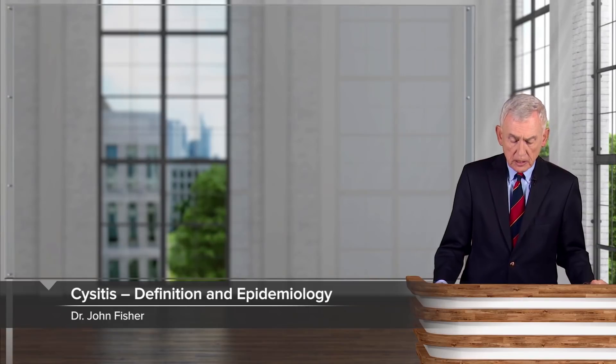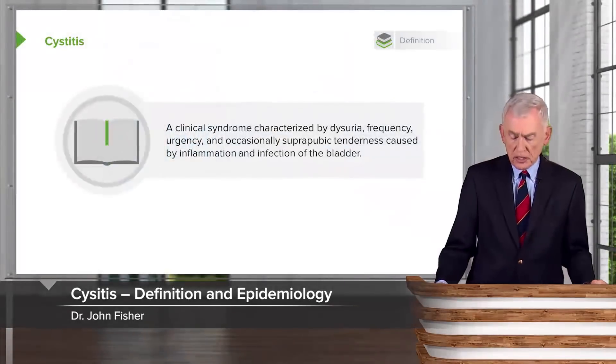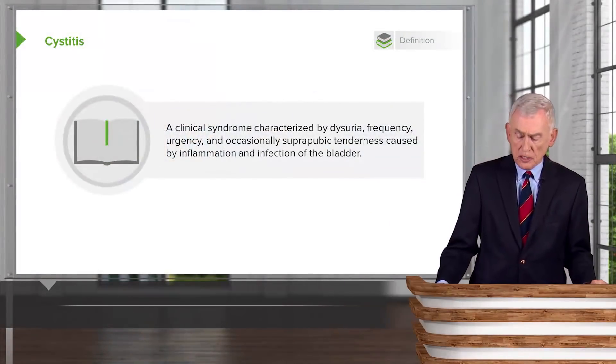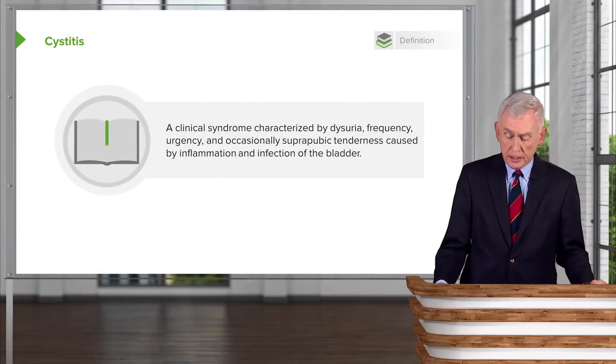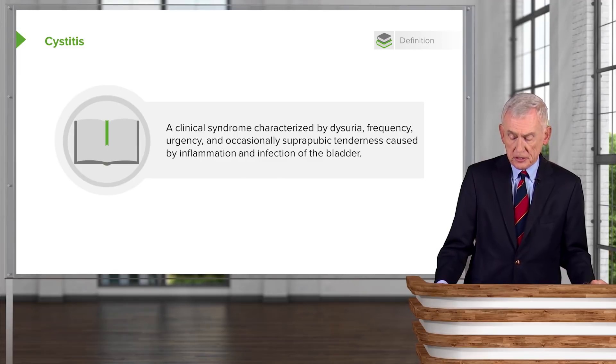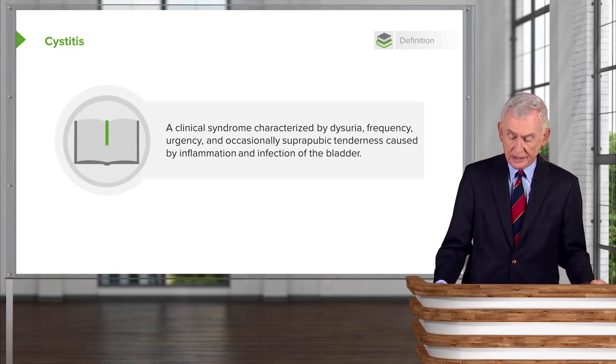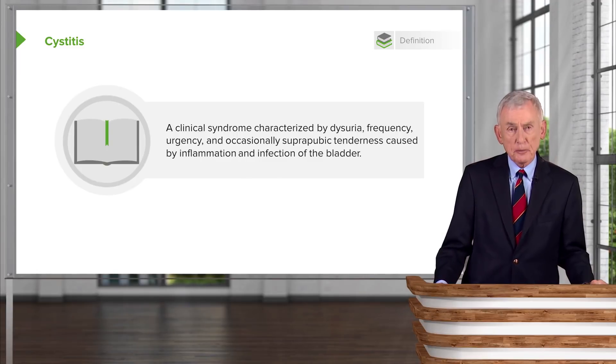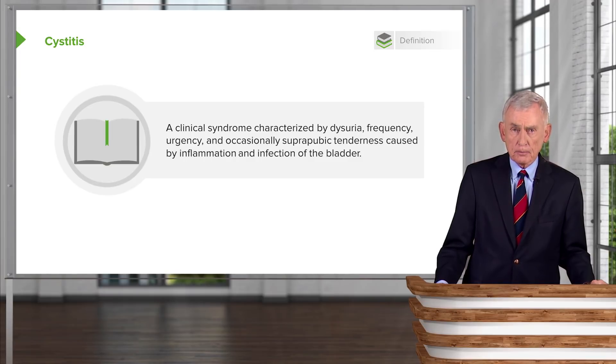In our discussion of urinary tract infections, we turn to cystitis. To define it, we'd call it a clinical syndrome characterized by dysuria, frequency, urgency, and occasionally suprapubic tenderness, caused by inflammation and infection of the bladder.